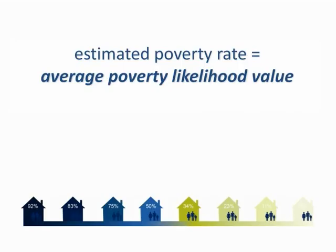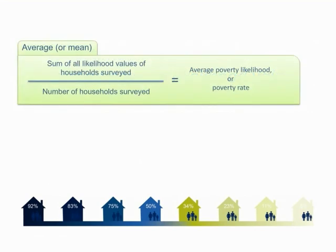Now, let's discuss how you calculate the rate of poverty in a group of households using one poverty line. Simply put, find the average or mean of the poverty likelihood values of all households surveyed. Remember, to find the average or mean, you add all values and divide the sum by the number of values.